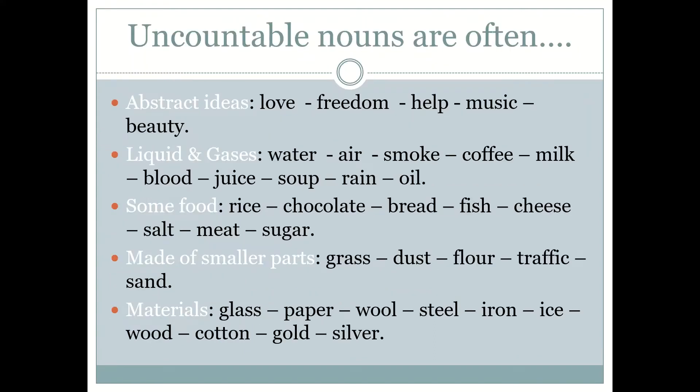Uncountable nouns are often abstract ideas. For example: love, freedom, help, music, beauty. They also include liquids and gases.